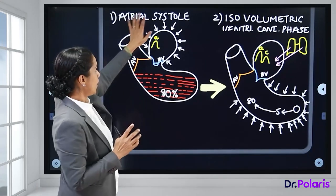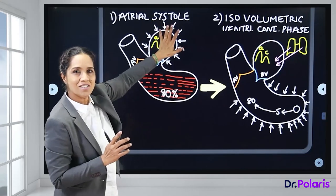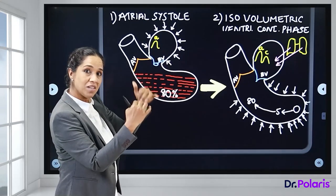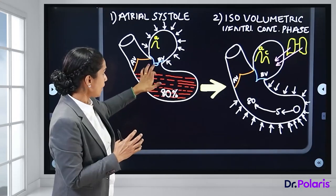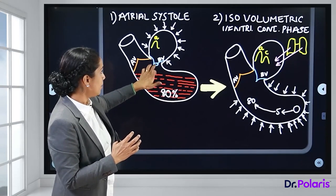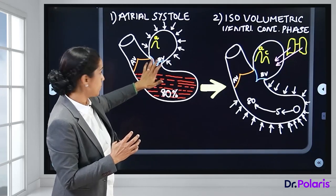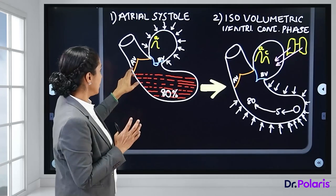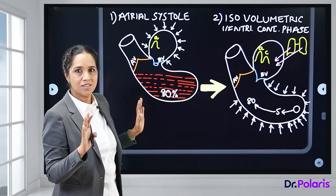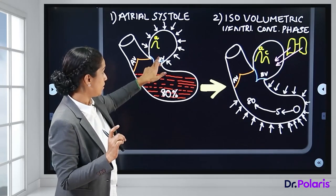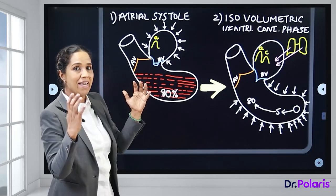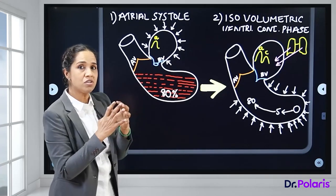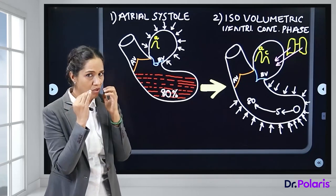Phase 1 — Atrial Systole: The atria is contracting (shown by an inward arrow). The aortic valve is closed, the bicuspid (atrioventricular) valve is open. When the atria contracts, it tries to empty its contents into the ventricle. Importantly, the ventricle is already 80% filled with blood before atrial systole begins.